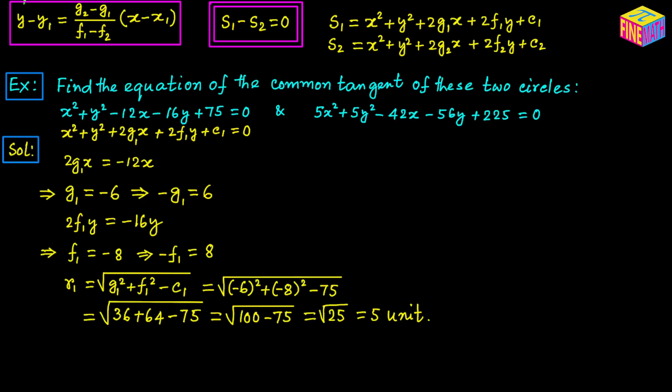Next, let's tackle the equation of the second circle. If you look at that equation, the coefficient of the X squared term and the Y squared term is not 1 — the coefficients are equal to 5. So first we should convert those coefficients to 1 by dividing both sides of the equation by positive 5. After doing that, the equation looks like this, and now we compare it with the general form of the equation of a circle.